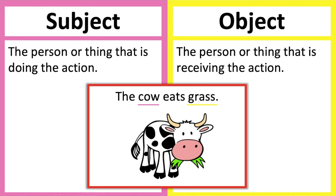An easy way to find the subject and the object is to first find the verb in the sentence. Then we can ask who or what. So in this example, the verb is eats. After this, we can find out who carried out this action by asking who eats. The answer is the cow, so the cow is the subject.